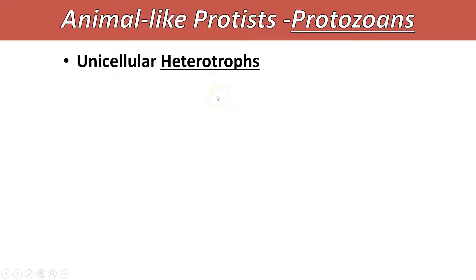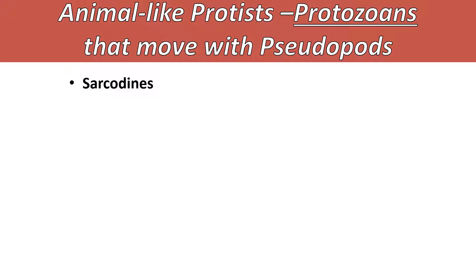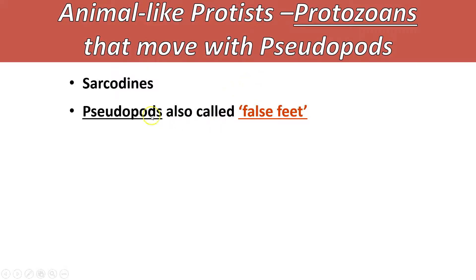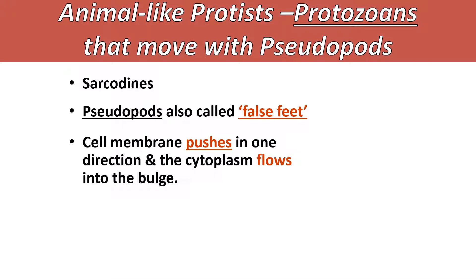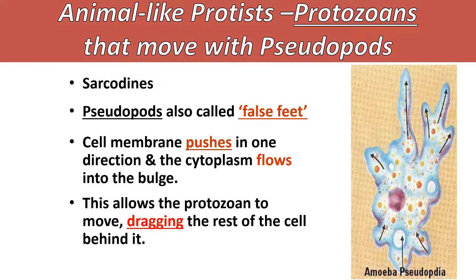Protozoans are all unicellular and all heterotrophs. We break them into four different groups based on how they move: pseudopods, cilia, flagella, and those that don't move on their own. The ones that move with pseudopods are in a group called the sarcadines. Sarcadines use pseudopods, which means false feet - pseudo means false and pod means foot. Their cell membrane pushes in one direction, and if it's finding what it needs, the cytoplasm flows out into that bulge, allowing the protozoan to move by dragging the rest of the cell behind it. Under a microscope you'd see a big blob with pokey-outy parts - those are pseudopods, like false feet reaching out.